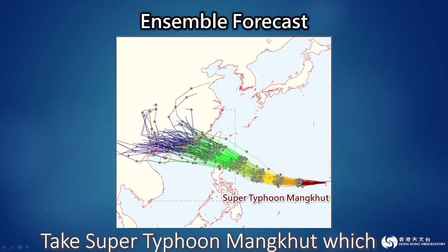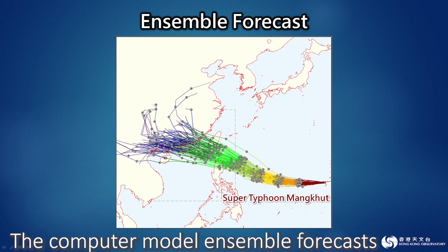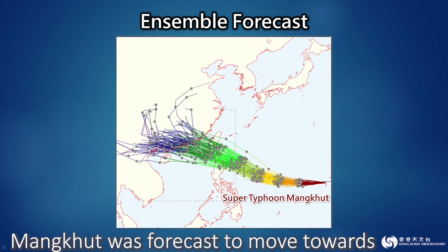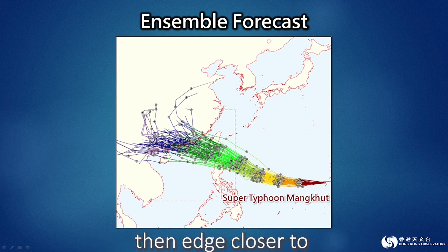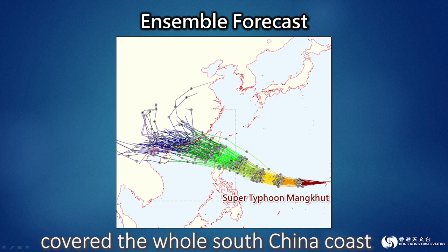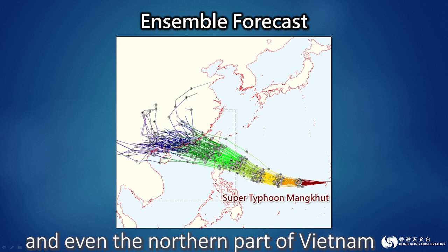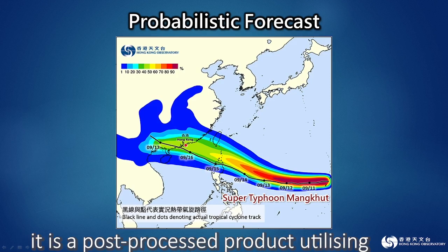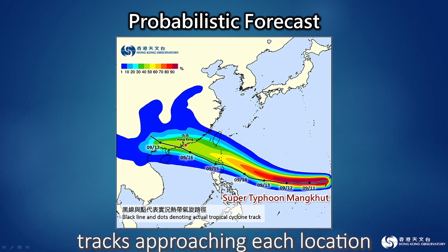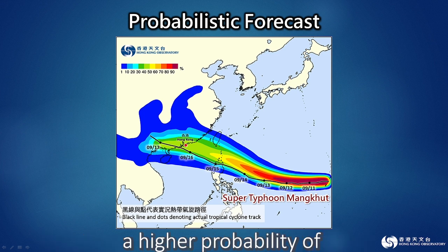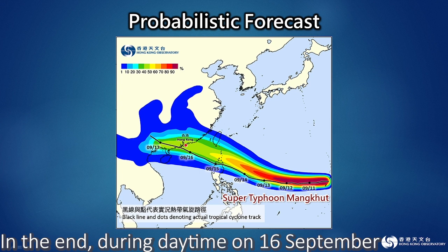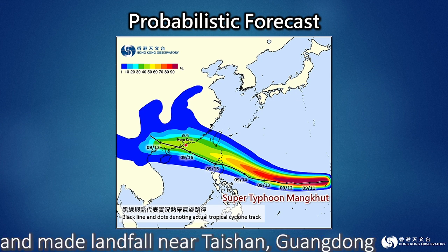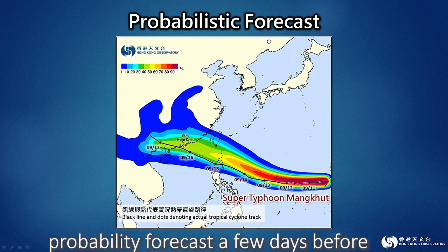Take Super Typhoon Mangkut, which devastated Hong Kong on 16th September 2018, as an example. The computer model ensemble forecast showed multiple possible scenarios for its track on 11th September. Mangkut was forecast to move towards the vicinity of Luzon Strait and then edge closer to the coastal areas of southern China. However, its potential landfall positions covered the whole South China coast and even the northern part of Vietnam. The track probability forecast map showed that Mangkut had a higher probability of making landfall near the Pearl River estuary. In the end, Mangkut skirted within about 100 km to the south-southwest of the Hong Kong Observatory and made landfall near Taishan, Guangdong, which was consistent with the track probability forecast made a few days before.